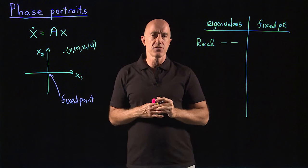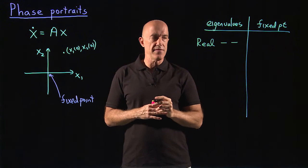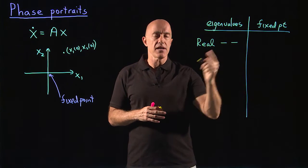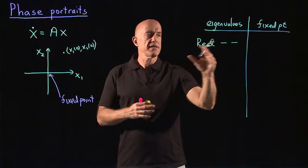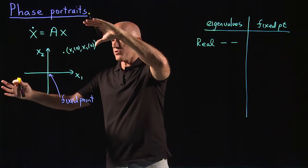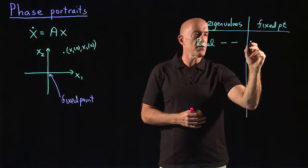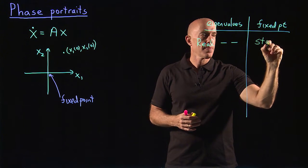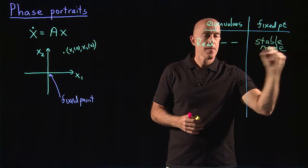Then we know that the solution has an exponential behavior. And because the eigenvalue is negative, it's a decaying exponential. So in this case, all of the solutions will, all the trajectories will converge onto the origin. We call this fixed point a stable node.